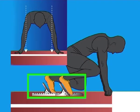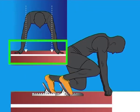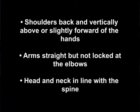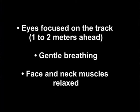On your marks: Feet correctly located in the blocks, fingers behind the line, fingers form a bridge, hands evenly positioned slightly wider than shoulder width, shoulders back and vertically above or slightly forward of the hands, arms straight but not locked at the elbows, head and neck in line with the spine, eyes focused on the track 1 to 2 meters ahead, gentle breathing, face and neck muscles relaxed.